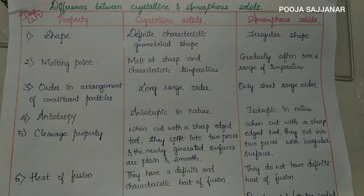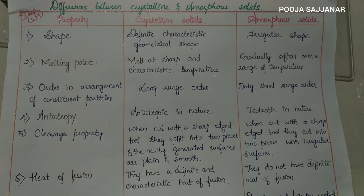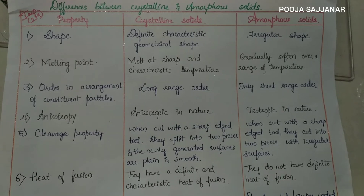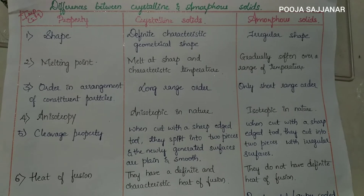Let's list out the differences between crystalline and amorphous solids. This is a highly repeated question for exams. The first property we consider is shape. In crystalline solids, they have a definite characteristic geometrical shape, because their constituent particles are arranged in a three-dimensional space in an orderly manner. Because of this ordered arrangement, crystalline solids have a definite shape.